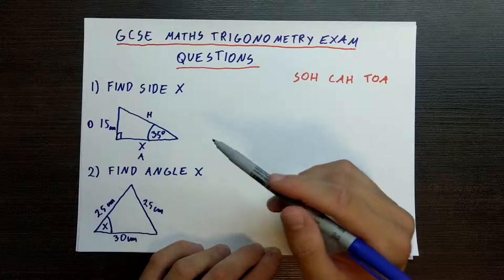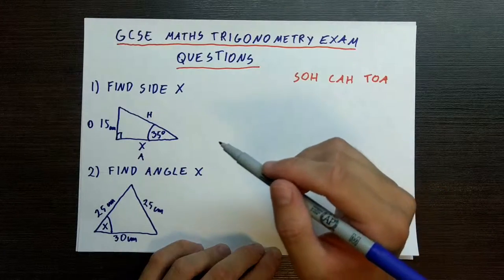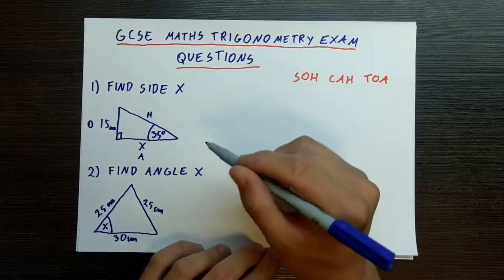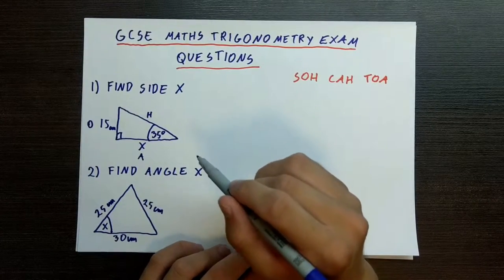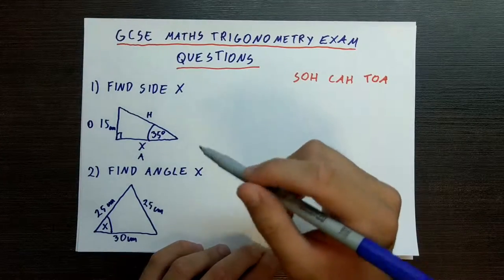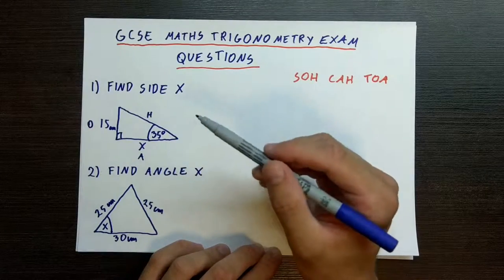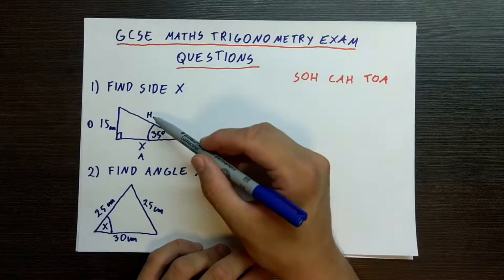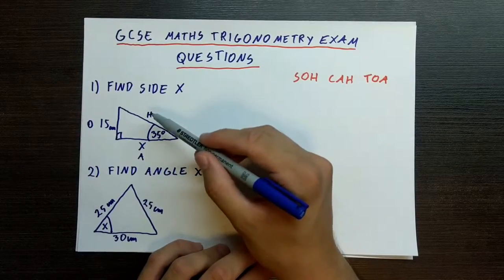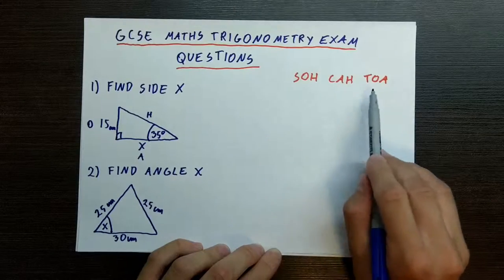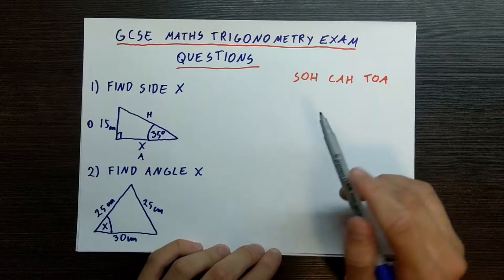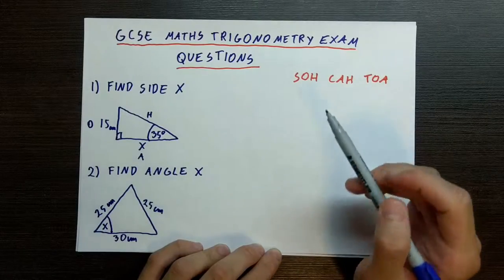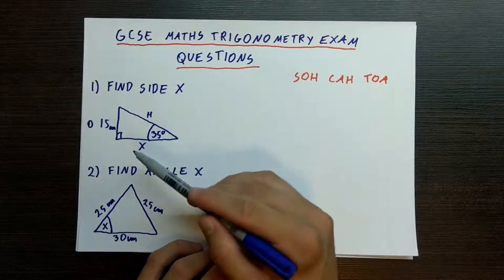Now we need to pick a formula that uses most of the information we are given, but also includes only one piece of information that we currently do not know and want to find out. We know what opposite is, we know what the angle is, however we do not know what adjacent is. We also don't know how long the hypotenuse is, but that is something we are not really interested in. Will we use sine, where you divide opposite by hypotenuse? No, because it doesn't include the side that we want.